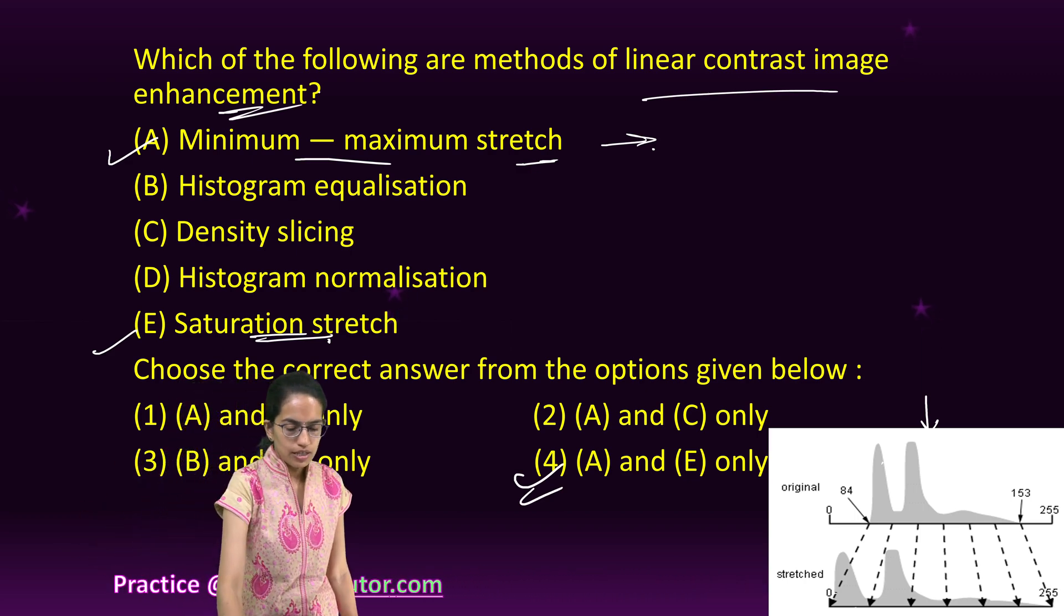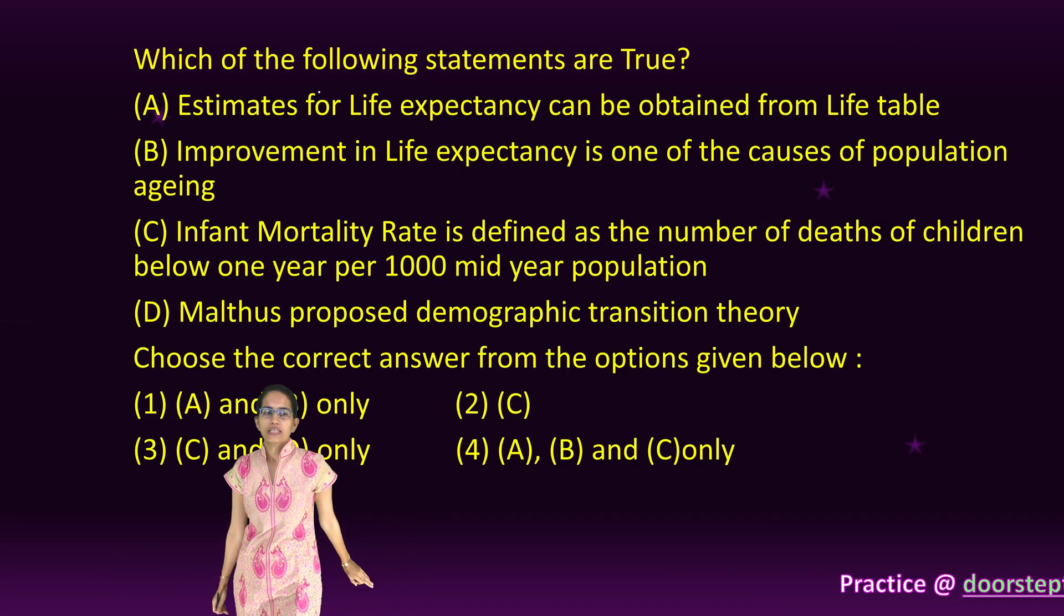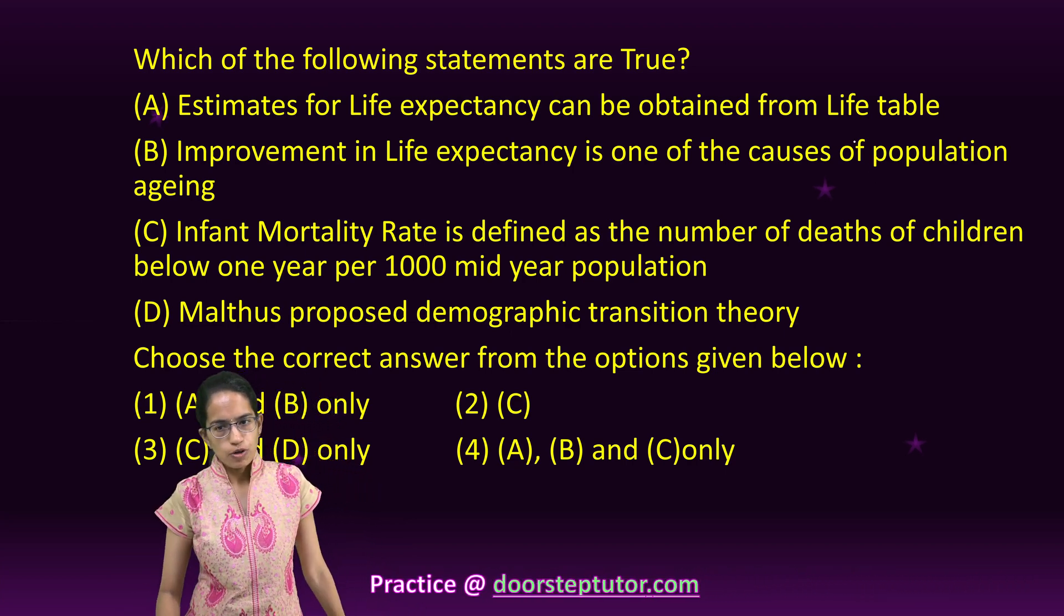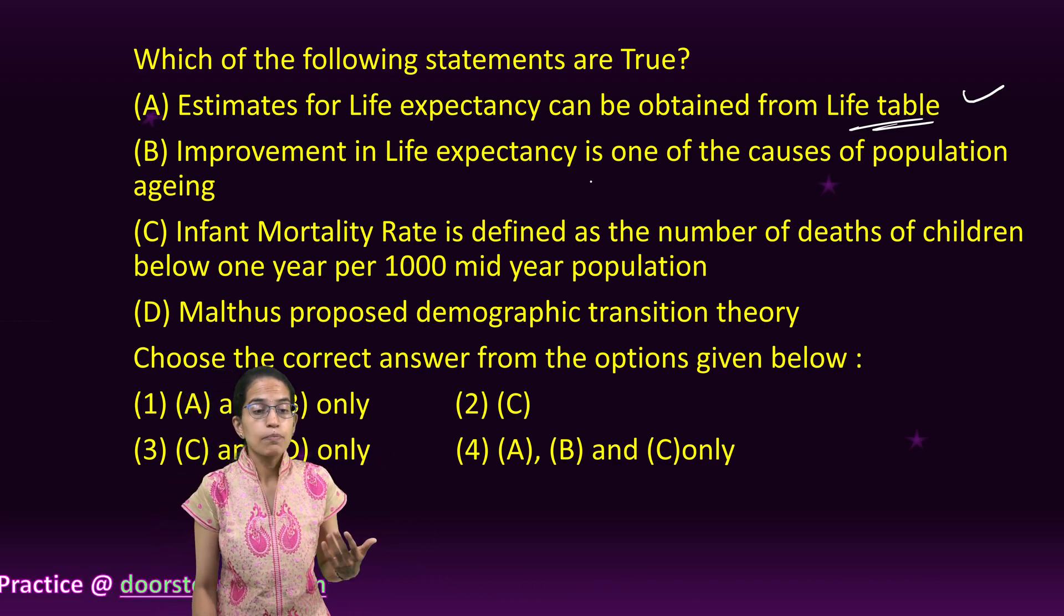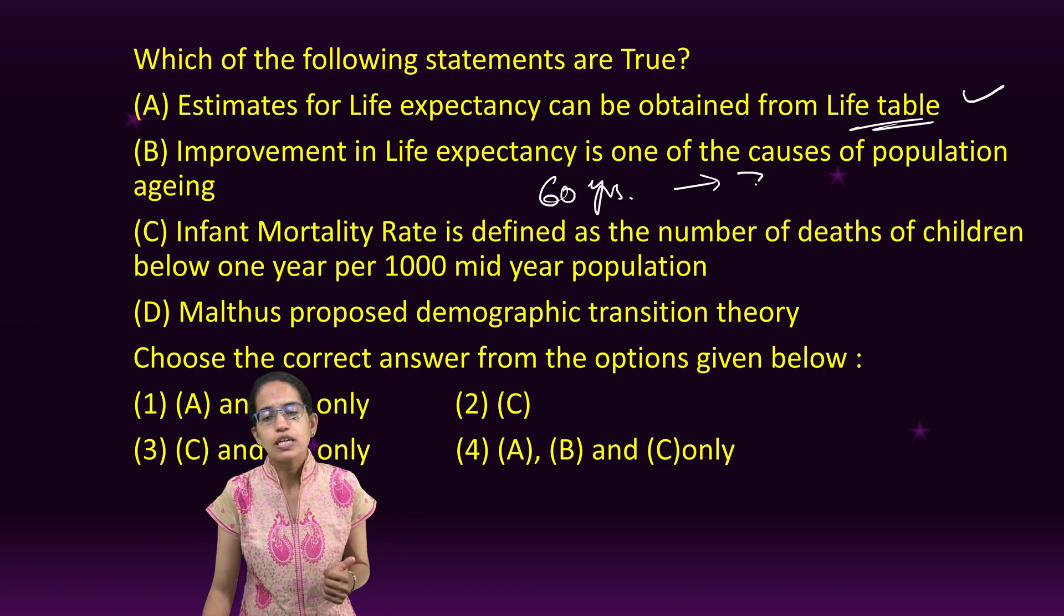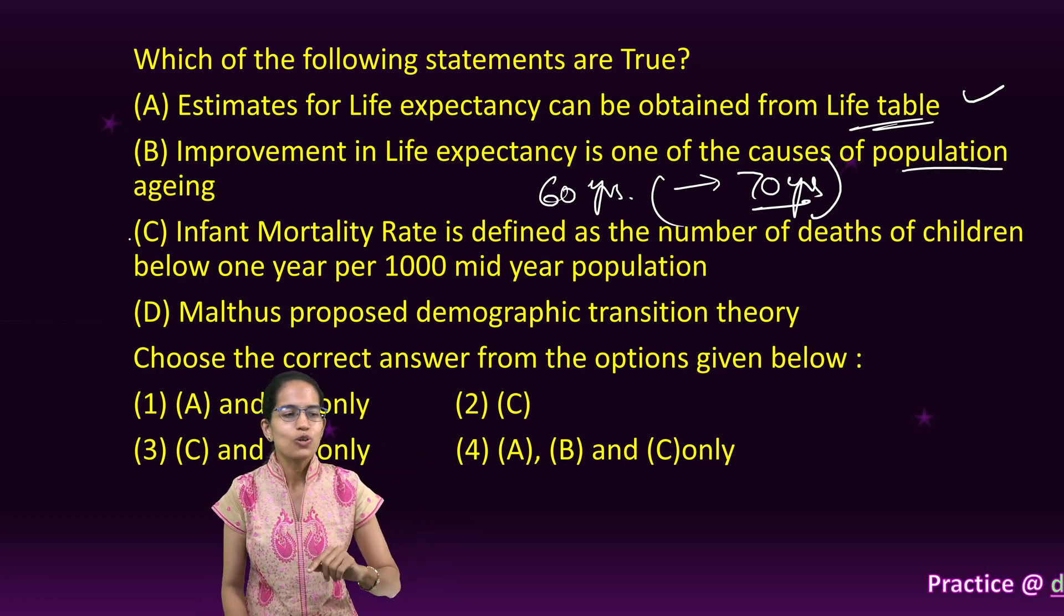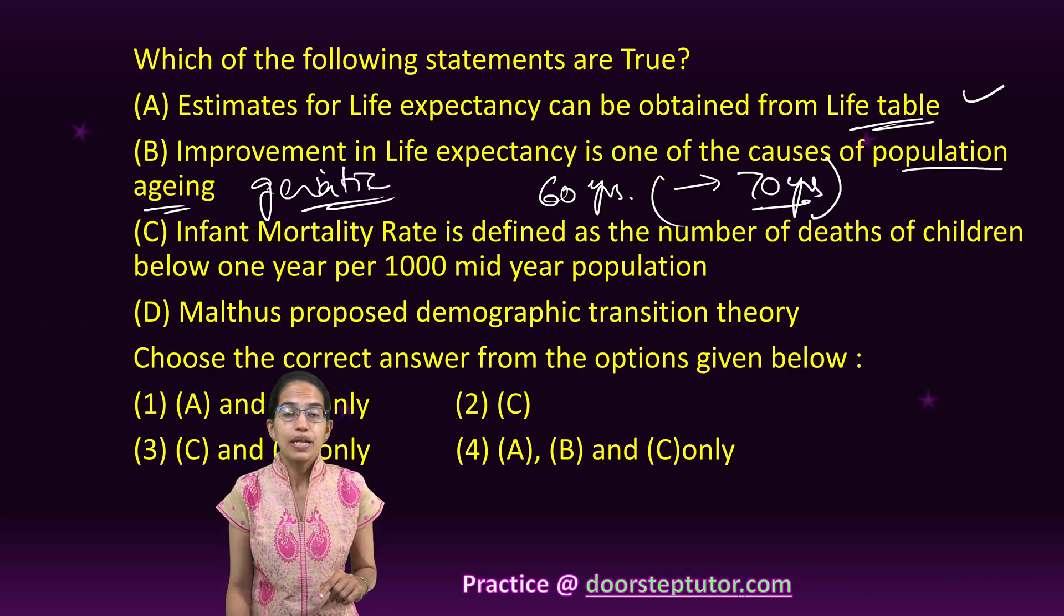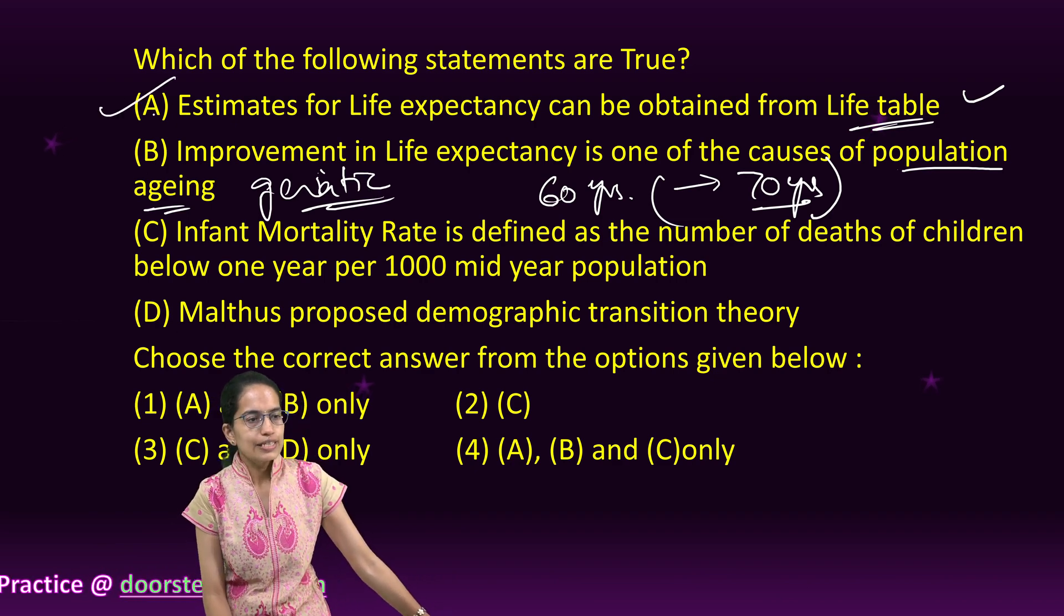One important question is on life expectancy. Estimates of life expectancy can be obtained from life tables - that's very correct. If life expectancy improves, what does that mean? A person was able to live, let's say, 60 years previously, now is able to live 70 years. That means the aging population would increase, so this would cause population aging or the geriatric population to increase, bringing a huge dependence on the working population. So A is correct, B is correct.